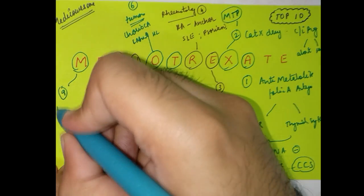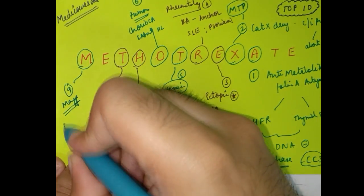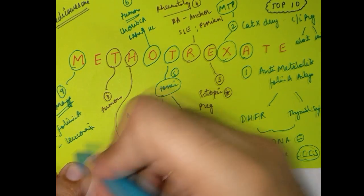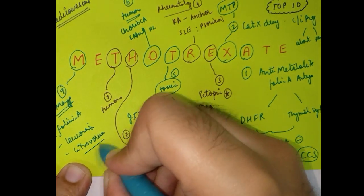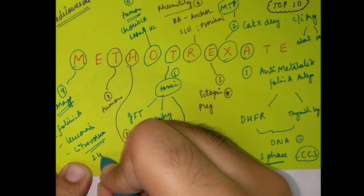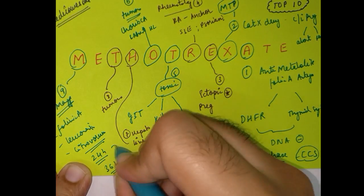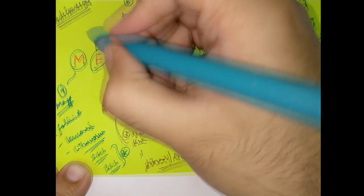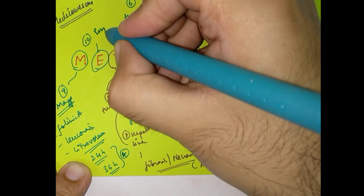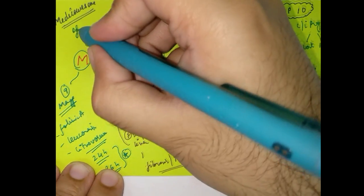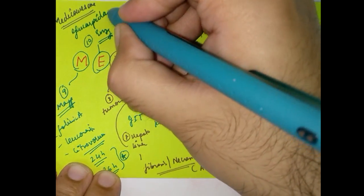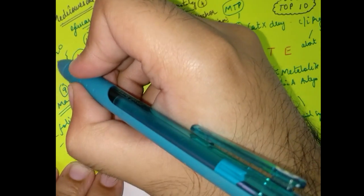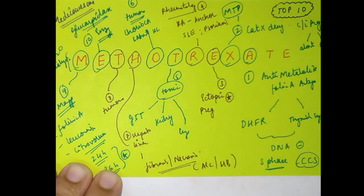How do we manage methotrexate toxicity? We manage it by giving folinic acid, also called leucovorin or citrovorum factor, within 24 hours — latest up to 36 hours — to rescue normal cells when giving high-dose methotrexate. An enzyme called glucarpidase can also be used to break down methotrexate. These, along with hydration and dialysis, constitute the management of methotrexate toxicity.